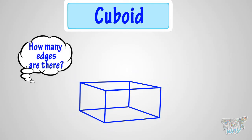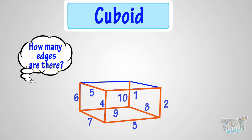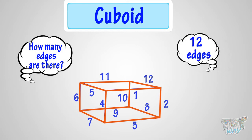1, 2, 3, 4, 5, 6, 7, 8, 9, 10, 11, 12! Wow! 12 edges! Also, all the edges of a cuboid are not equal, as in the case of a cube.